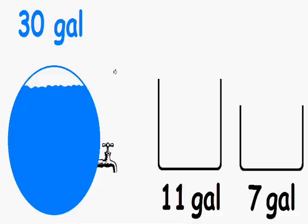So the question is, how do we empty exactly half of the tank using only the 11 gallon and the 7 gallon container for measuring?